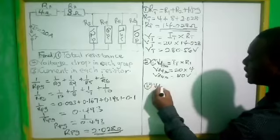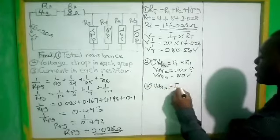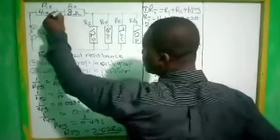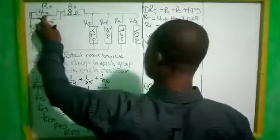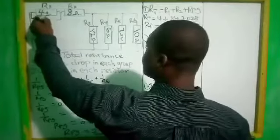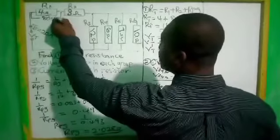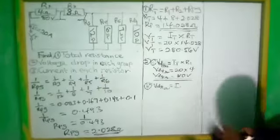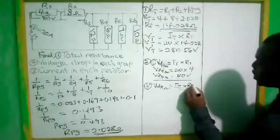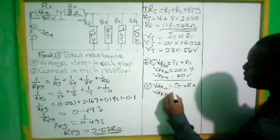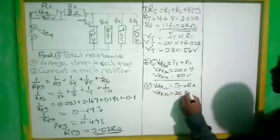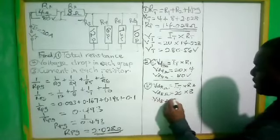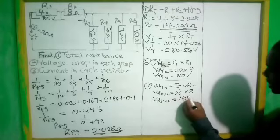Voltage drop in the 8-ohm resistor equals total current times R2. So voltage drop in 8 ohms equals 20 times 8. The voltage drop in the 8-ohm resistor is 160 volts.